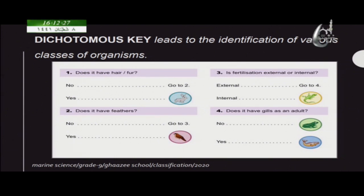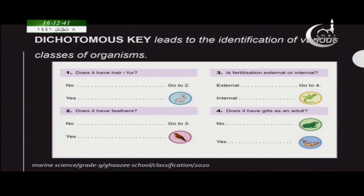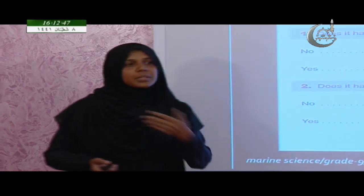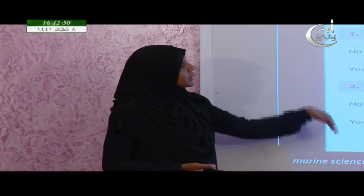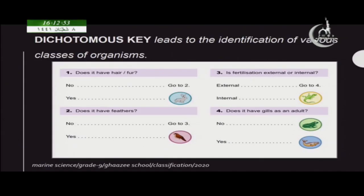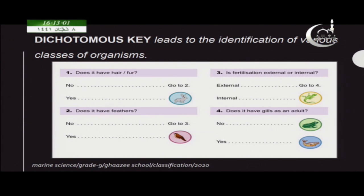Then comes the dichotomous key. The dichotomous key leads to identification of organisms. For example, if you get five organisms — a rabbit, a bird, a lizard, frog and a fish — how scientific identification works is: first they look at the features. For example, first they look at the outer covering of these organisms and form questions to identify each one.